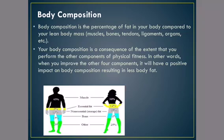Body composition is the percentage of fat in your body compared to your lean body mass — things like muscles, bones, tendons, ligaments, organs, etc. Below is a diagram just showing you kind of what that looks like. Body composition.